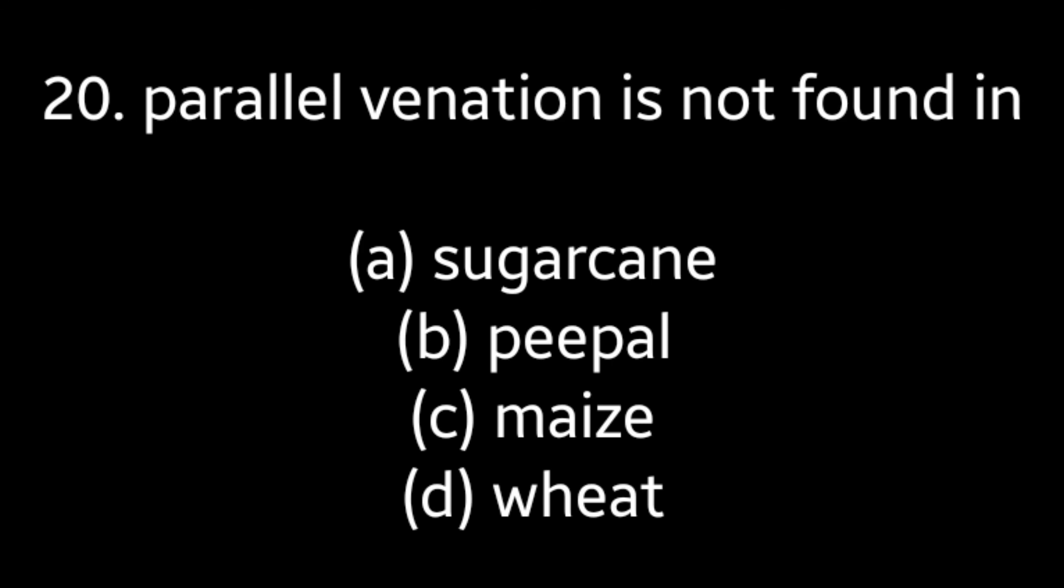Question number 20: Parallel venation is not found in Sugarcane, Peepal, Maize, or Wheat. Answer is option B, Peepal.